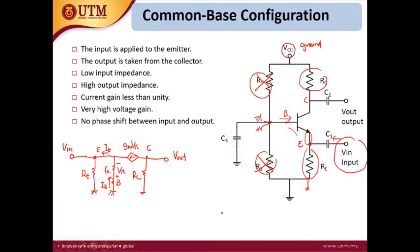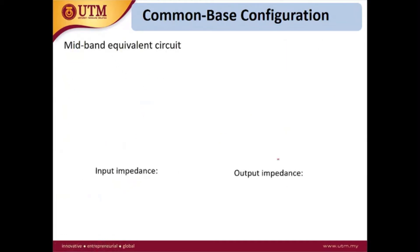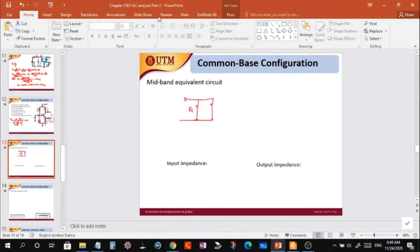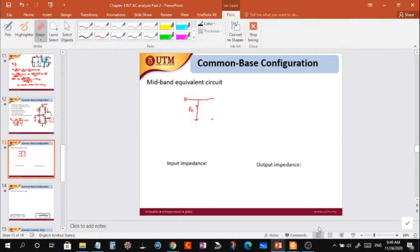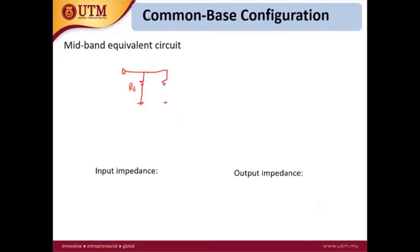Let me redraw the circuit. We have RE, then Rpi with its polarity, then the current source gm*Vpi, then RC, and finally Vout. This is our mid-band equivalent circuit for the common base configuration.